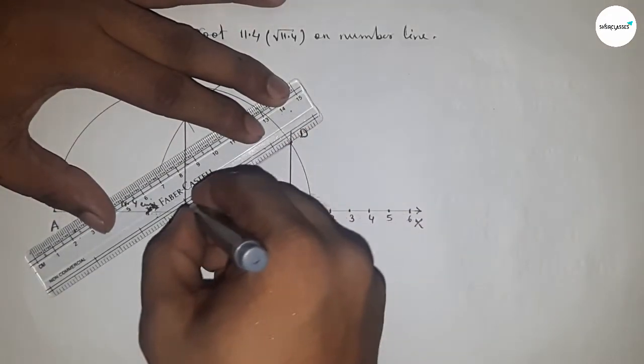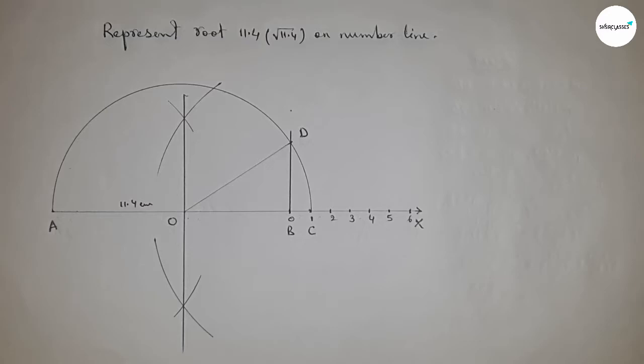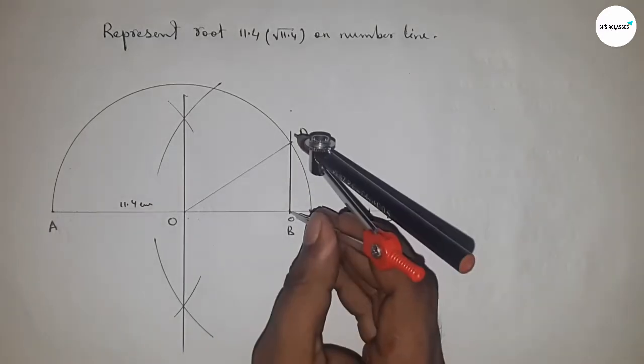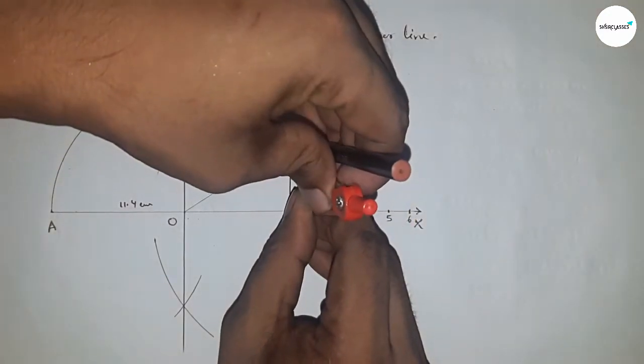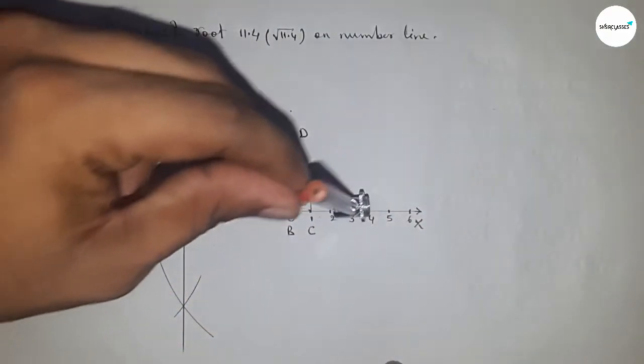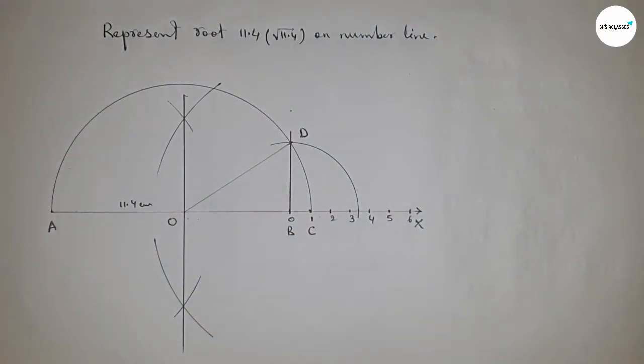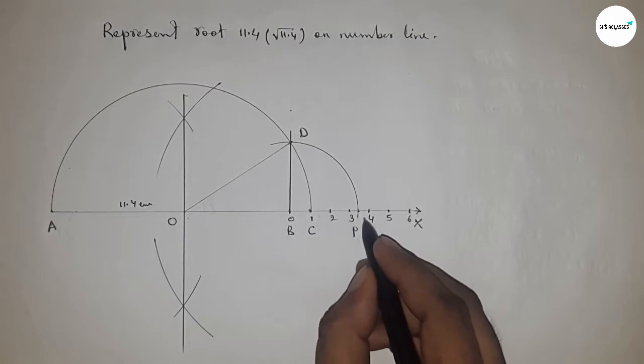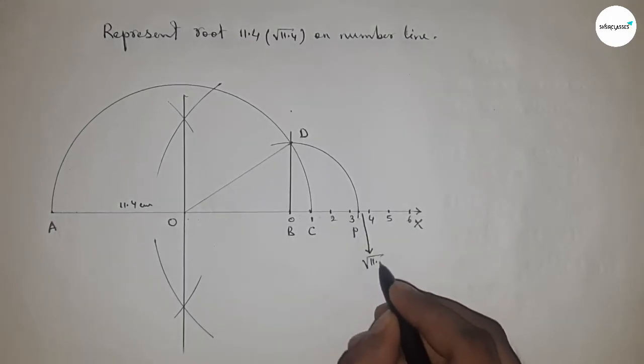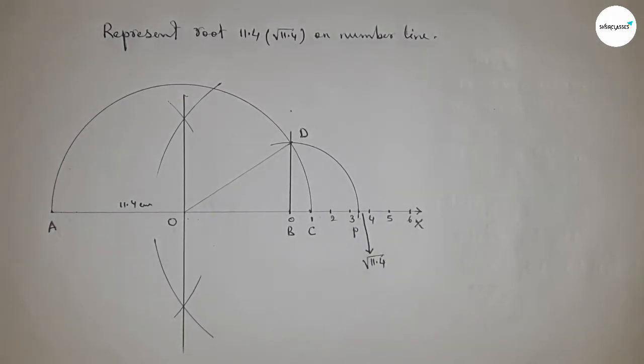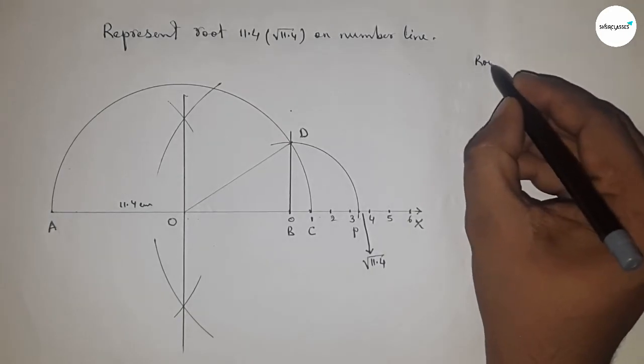Now take the length BD by compass to draw an arc which meets the number line at point P. This is the representation of √11.4 on number line. Now let's discuss the calculation.